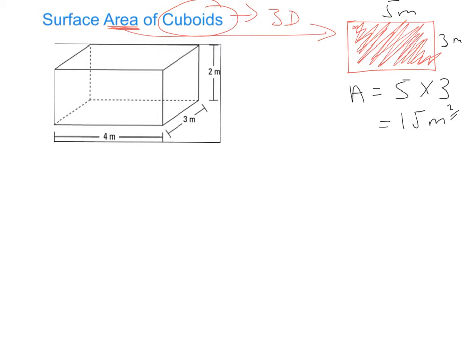The first thing we're going to do is draw this out in its 2D parts, thinking about what 2D shapes make up this 3D cuboid. Let's start with the bottom rectangle of the cuboid — let's draw it out and put in the lengths. Across its length it's 4 metres, and going back it's 3 metres.